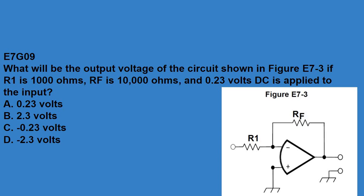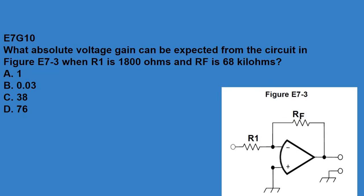E7G09, what will the output voltage of the circuit shown in E7-3 be if R1 is 1,000 ohms, RF is 10,000 ohms, and 0.3 volts DC is applied to the input? Negative 2.3 volts. E7G10, what absolute voltage gain can be expected from the circuit in figure E7-3 when R1 is 1,800 ohms and RF is 6,800 kilo ohms? Answer is 38.